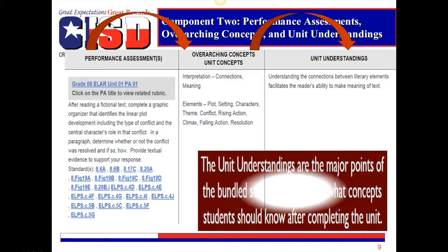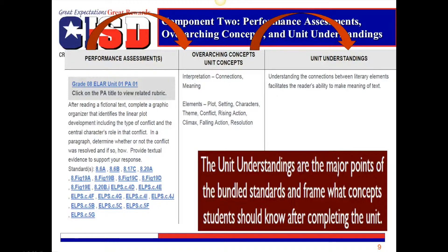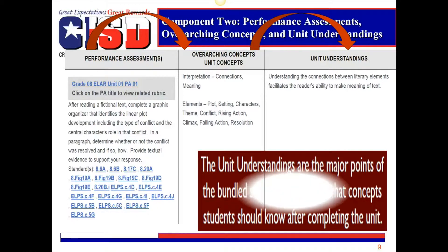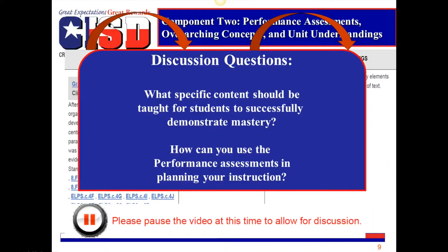The third column represents the unit understandings. If students can successfully complete the performance assessment per the rubric provided, then they will have learned and independently demonstrated their understanding of the connections between literary elements and how that knowledge facilitates the reader's ability to make meaning of text. This will be evident in both their graphic organizer and their writing in the paragraph with textual evidence. The performance assessments are ways students can demonstrate their learning or mastery of the taught content. For each unit in ELAR, the performance assessments are structured for reading content, writing, oral and written conventions, writing journals, and a vocabulary notebook. Please pause the video to open the rubric for the first performance assessment on your grade level IFD and discuss: What specific content should be taught for students to successfully demonstrate mastery, and how can you use the performance assessment in planning your instruction?